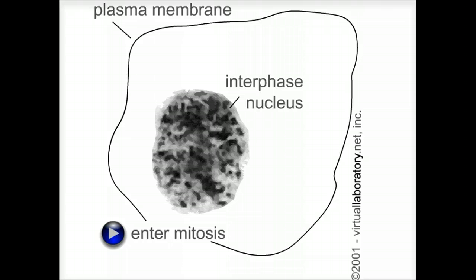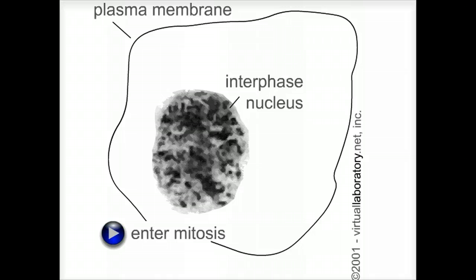Eukaryotic cells differ in many ways from prokaryotic cells, most dramatically by the presence of a membrane-bound organelle, the nucleus, within the cytoplasm. It is within the nucleus that the chromosomes are located. These are linear molecules, and typically many different linear DNA molecules — many different chromosomes.